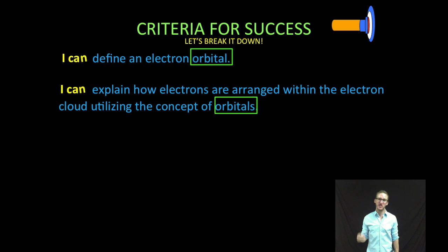First thing we need to do is better understand the electron cloud. So breaking it down here, we're going to first define an electron orbital, and then number two, we are going to explain how electrons are arranged within the electron cloud using the concept of orbitals. Basically here, we're going to try and better understand the electron cloud. And to do that, we need to know what the heck an orbital is and how are electrons arranged in those orbitals.